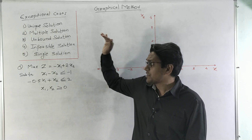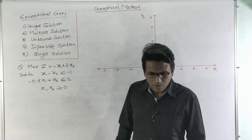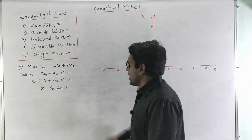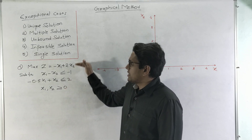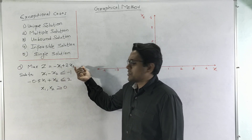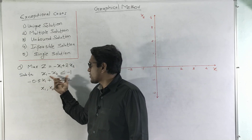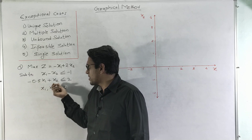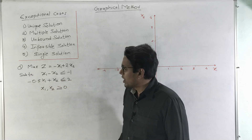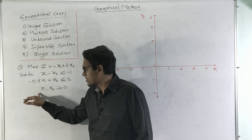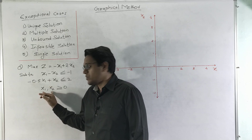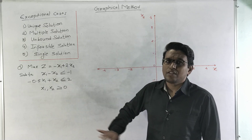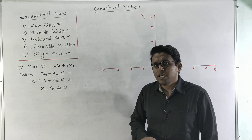Let us start with the problem. It is given: maximize z equals minus x1 plus 2x2, subject to the constraints: x1 minus x2 less than or equal to minus 1, then minus 0.5x1 plus x2 less than or equal to 2, and the non-negativity restrictions x1, x2 greater than or equal to 0.